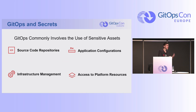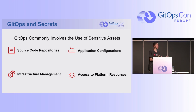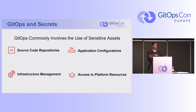GitOps typically involves the use of sensitive assets. Where are those sensitive assets coming from? First, your source code repositories — you typically need to talk to a Git repository to implement GitOps. Next is infrastructure management: how are you connecting to the machines you're targeting? Third is application configurations — database passwords, external resources. Then certificate management. And finally, access to platform resources like AWS, Google, and Kubernetes, where you typically need to authenticate.